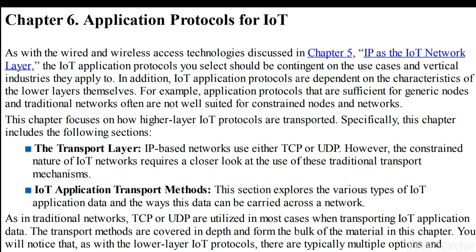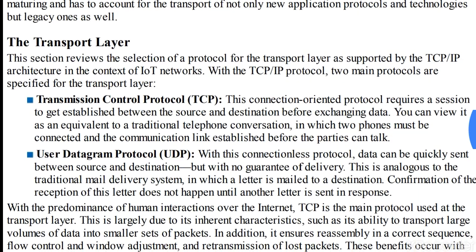The transport layer tells us how to select a protocol for the transport layer supported by TCP/IP with respect to IoT networks. Whatever we select should be suited for IoT networks. The two main protocols specified here are TCP, that is Transmission Control Protocol, and UDP, that is User Datagram Protocol. The main difference is that TCP is a connection-oriented protocol and UDP is a connectionless protocol.